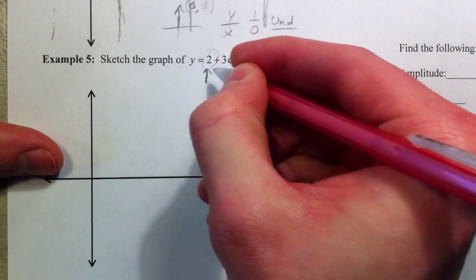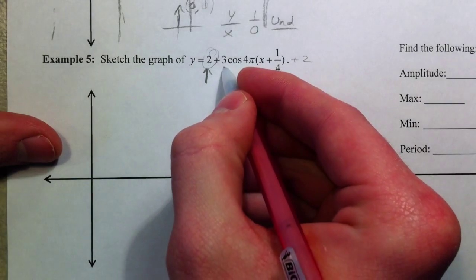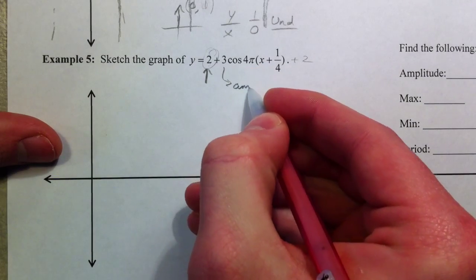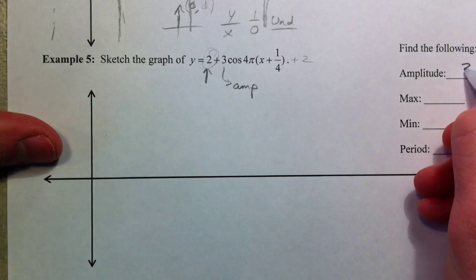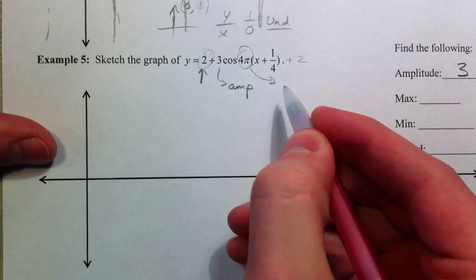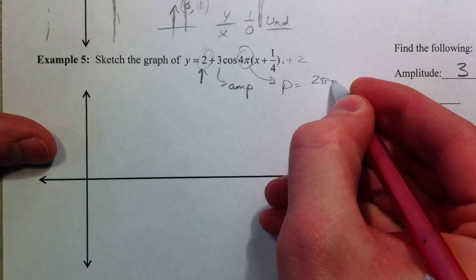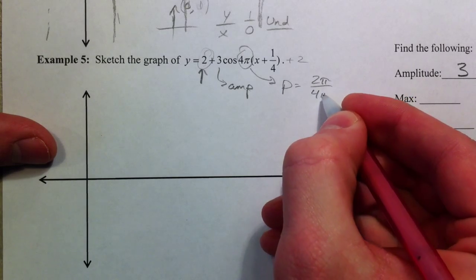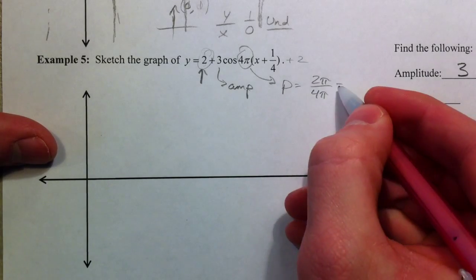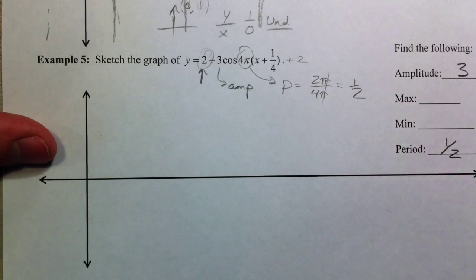That 3 is the amplitude. And so, I'm going to say the amplitude is 3. The 4 pi affects the period. Period equals 2 pi, divided by whatever that is. Divided by 4 pi. So, in this case, the pi's cancel out. You get 1 half. So, the period is 1 half.